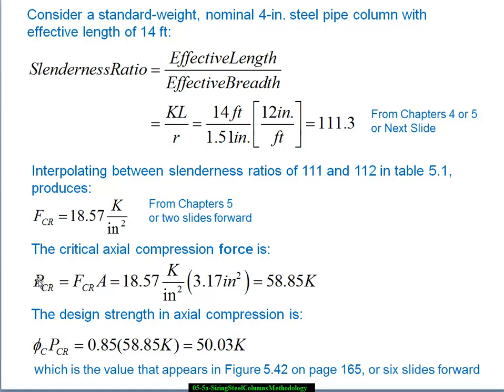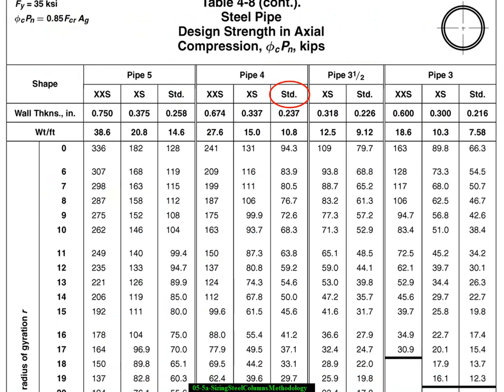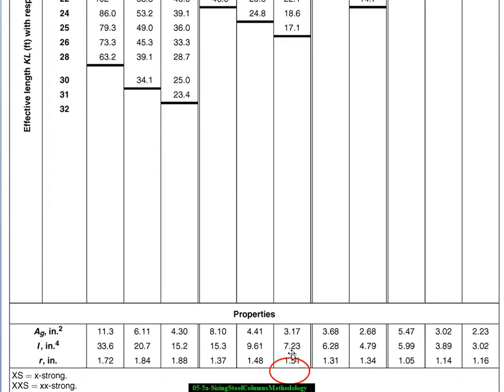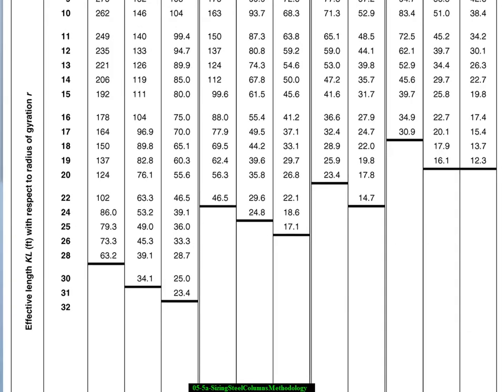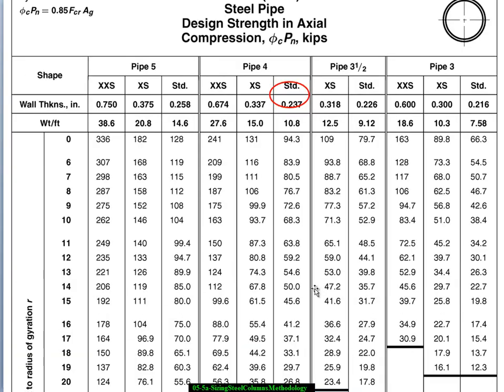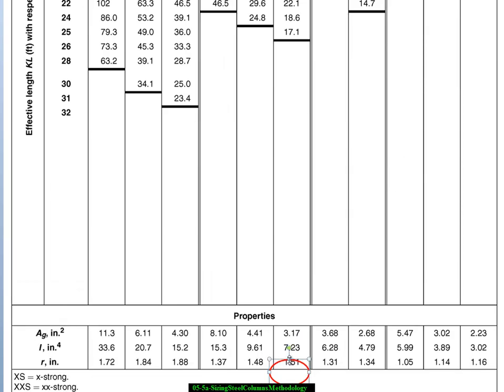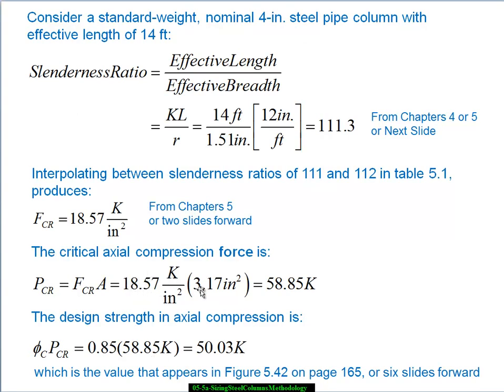Now if I want to know the critical or failure force P, axial force P, that this column will resist, I need to take this stress, which is the failure stress, and multiply that times the area. Now in order to do that, I've got to go back to this table again and scroll down. And now I'm looking for, whoops, I hate it when I grab the wrong thing. Okay, so there's the area. Gross area, 3.17. So I'm going to come back here and I'm going to multiply this critical stress times the area and I get 58.85 kips. So that's going to be the failure load for this nominal 4 inch standard steel pipe of effective length 14 feet. 4 inches is not too big. And think about it, it's holding 60 kips almost.